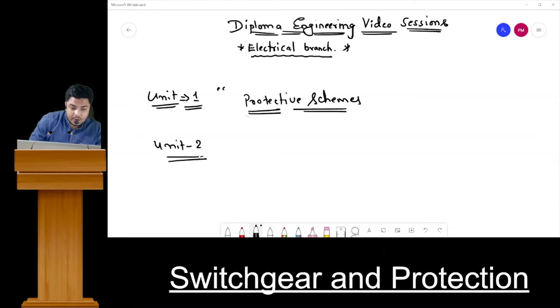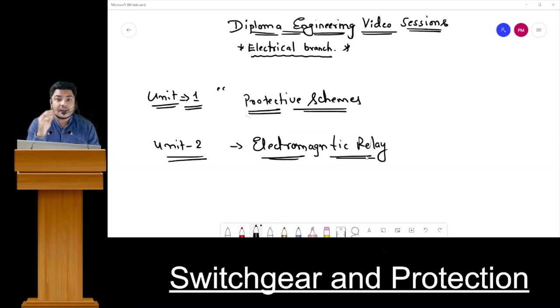Unit 2 basically deals only with electromagnetic relays. Inside that we have operating systems, operating principles of relays, universal relay torque equation we are going to discuss. Let me write it - we are going to discuss electromagnetic relay. Not electromechanical but electromagnetic - both relays are very different from each other. So we are going to discuss electromagnetic relay. I think till now you must be aware that the function of relay is an equipment that will actuate the circuit breaker, that will give command to my circuit breaker whether to trip or not.